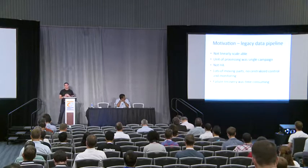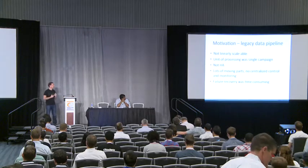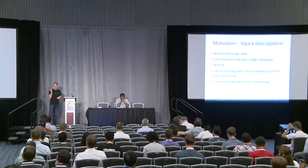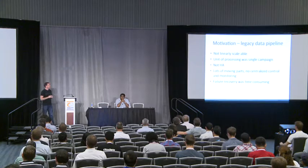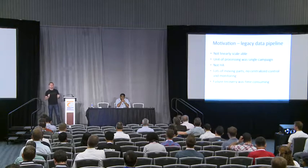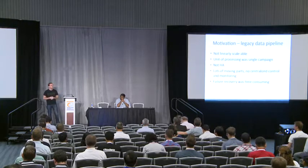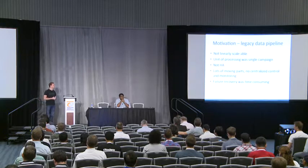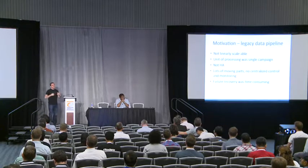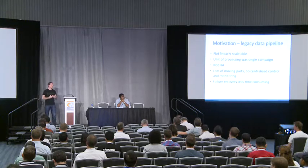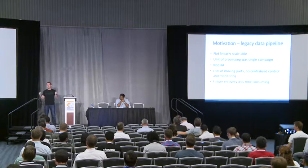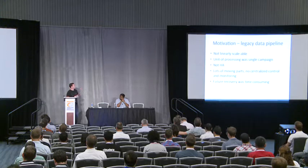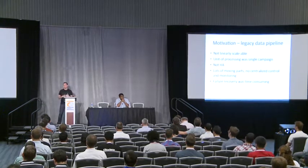Like I mentioned before, there was a legacy data pipeline, and the motivation to move away from it encompasses a bunch of different points. This pipeline was built about four years ago. Back then, we were doing one billion requests per month on the platform. We are currently doing 45 billion per month — a 45x increase over the period of three or four years. Of course, the design for that pipeline wasn't done in a way that would allow us to scale forever. So that was a very big motivation to move away from the legacy data pipeline. We wanted to make sure the new one would be linearly scalable.